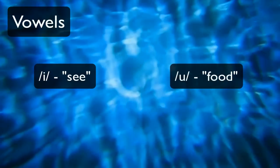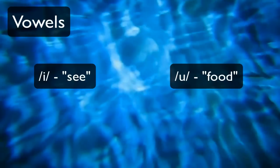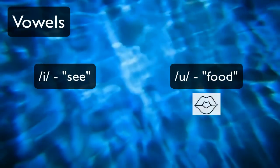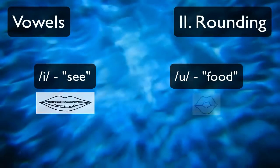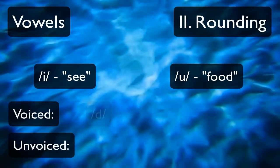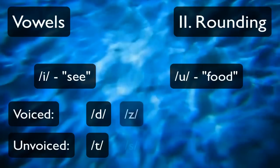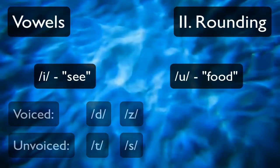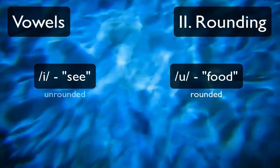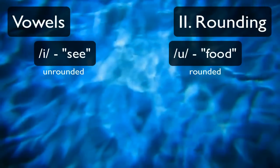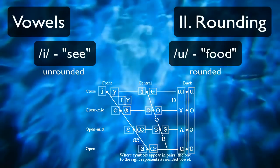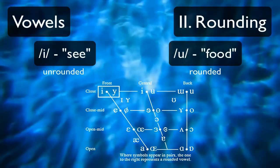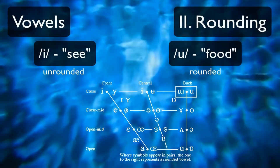Now let's compare E and OO as in food. First focus on your lips. You'll notice that they come together in a circle for U and are relatively relaxed with E. This is rounding. Just like with consonant voicing where you had voiced and unvoiced pairs like D and T and Z and S, each vowel comes in rounded and unrounded forms. On the IPA vowel chart, the rounded vowels are on the right side of each line and unrounded on the left. So E is on the left side of this pair, and U is on the right.